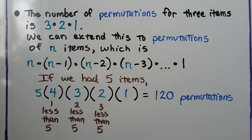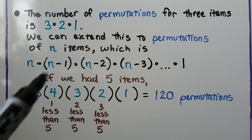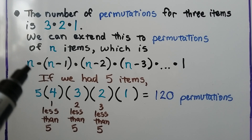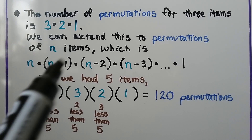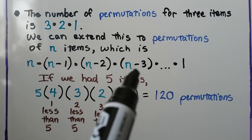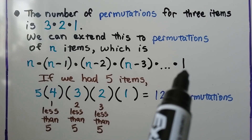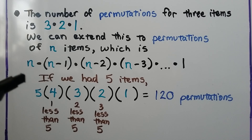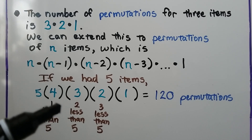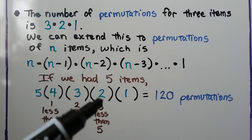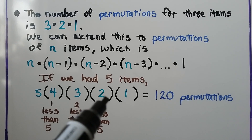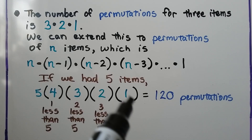The number of permutations for three items is three times two times one. We can extend this to permutations of n items — some number n — which would be that number n times one less than n, then two less than n, then three less than n, until we got to one. So for example, if we had five items, then the five would be n, then n minus one would be four, n minus two would be three, n minus three would be two, and we would keep subtracting one until we got to one.